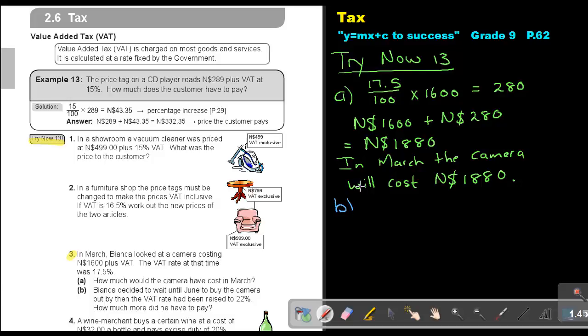So basically, I'm just going to work out 22% now. I multiply it with the 1600 and that's going to give me 352.